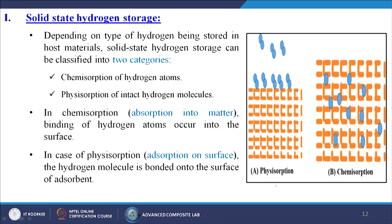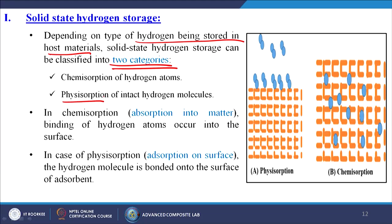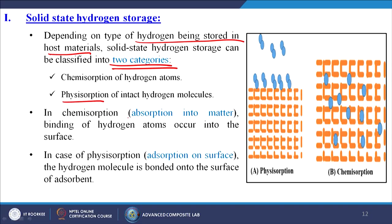Solid state hydrogen storage, depending on the type of hydrogen being stored in the host material, can be classified into two categories. First is chemisorption of hydrogen atoms — some kind of chemical reaction takes place. Second is physisorption of intact hydrogen molecules — the hydrogen molecules are physically present in the system. In chemisorption, binding of hydrogen atoms occurs into the surface itself. In physisorption, the hydrogen molecule is bonded onto the surface of the adsorbent. So in one case it stays on the surface; in the other it goes inside the material at the molecular level.